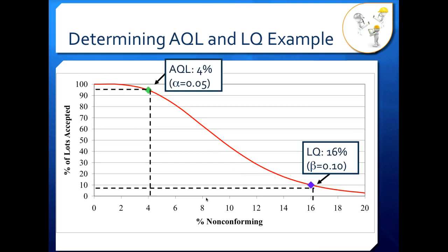Here we have lines corresponding to the AQL and LQ. Let's look at our producer's risk first. Our alpha is 0.05, so we subtract that from 1 to get our percent accepted: 0.95 or 95%. When we read over on our 95% acceptance line to our OC curve, we drop down and read that just above 4% nonconforming corresponds to the AQL. So our AQL here is about 4%.